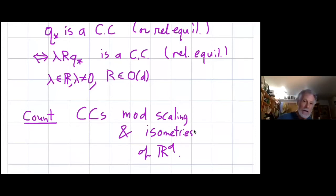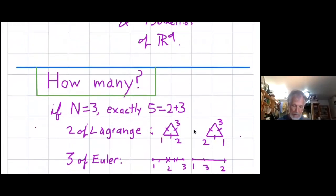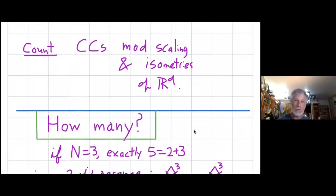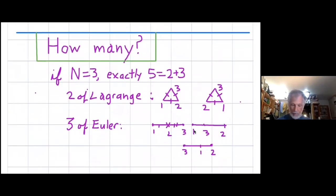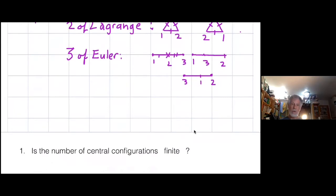The theorem says that in two dimensions, the relative equilibria, the configurations that have relative equilibria through them are in bijection with the central configurations. Because of Galilean symmetry and because the potential is homogeneous, if you have one central configuration, you have a whole group orbit of them. Any rotation, translation, or scaling of it is also a central configuration. So when you're counting them, you want to count the orbits. So this first question is, how many similarity classes of central configurations are there?